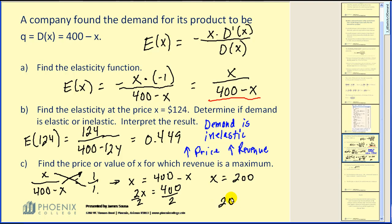So the price should be set at $200 to maximize revenue. As you can see from part b, when it was $124, it was inelastic, meaning we should increase price. And in fact, we should increase it to $200.